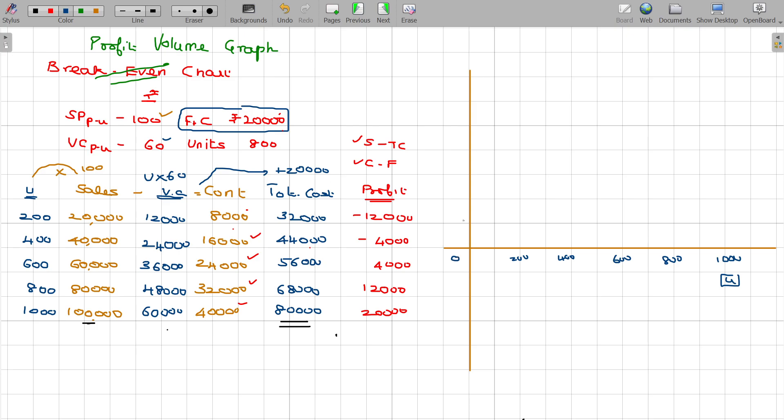Y axis in rupees, 4,000 rupees, rupees in 1000s, 8,000 rupees, 12,000 rupees, 16,000 rupees, 20,000 rupees. Similarly, minus 4,000 rupees, minus 8,000 rupees, minus 12,000 rupees, minus 16,000 rupees.